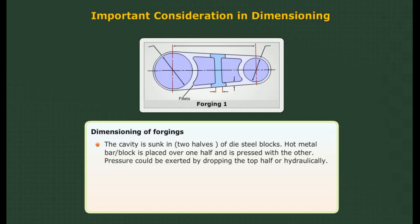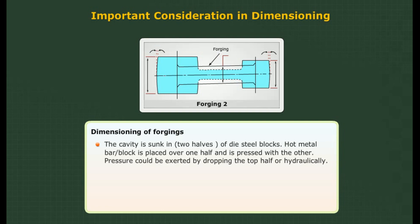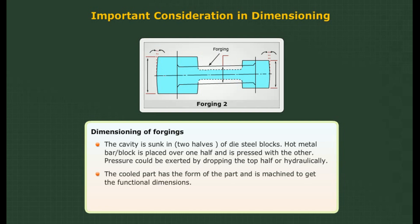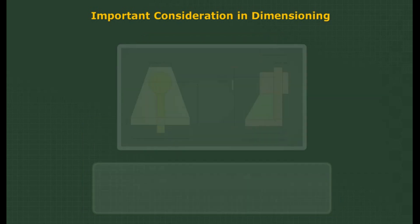Dimensioning of forging: The cavity is sunk in two halves of hardened steel blocks. A hot metal bar or block is placed on one half and pressed with the other — pressure can be exerted by dropping the top half or hydraulically. The cooled part has the form of the part and is machined to get the functional dimensions. Forgings are very strong on account of the favourable grain pattern in the metal.